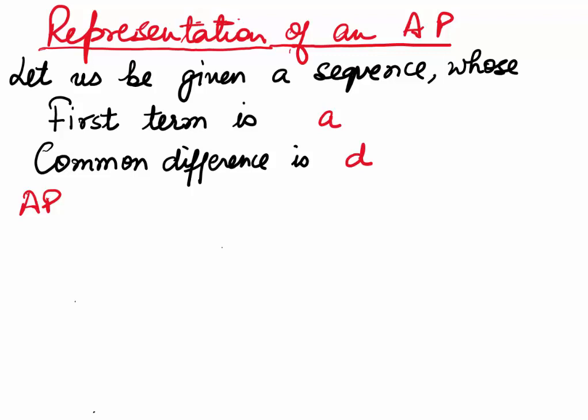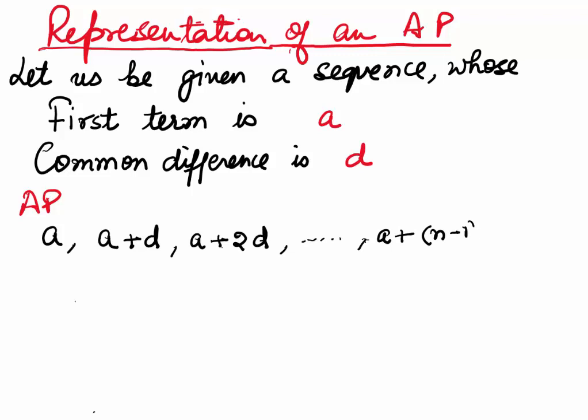How do we represent an arithmetic progression? If we are given a sequence whose first term is A and the common difference is D, then we write the arithmetic progression starting with the first term A, then A plus D, then A plus 2D as the third term, and going on adding D, we get our nth term as A plus (N minus 1)D.